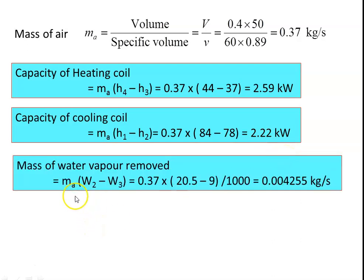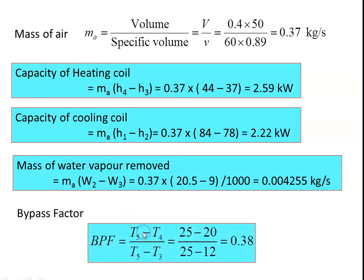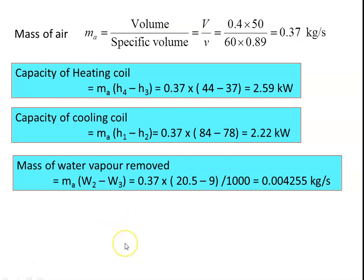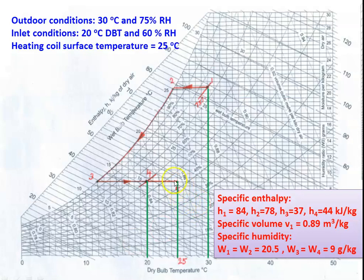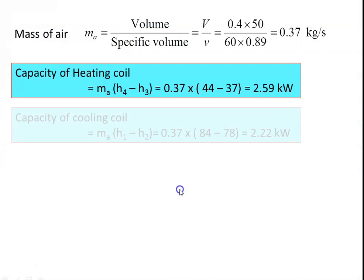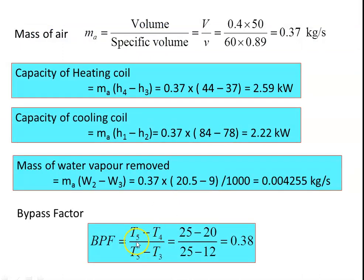Mass of water vapor removed = ma × (w2 − w3) = 0.37 × (20.5 − 9) / 1000 = 0.00425 kg/s. For the bypass factor, referring to the chart: surface temperature of heating coil, outlet temperature, and inlet temperature of air. Bypass factor = (t5 − t4) / (t5 − t3) = surface temperature minus outlet temperature divided by surface temperature minus inlet temperature.